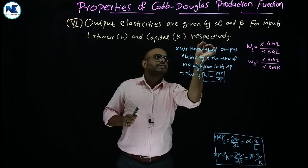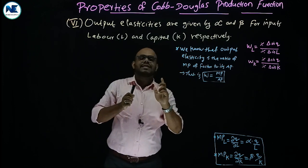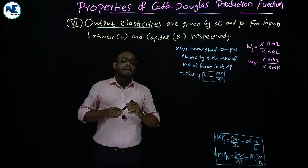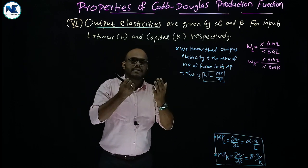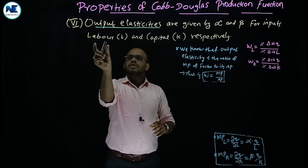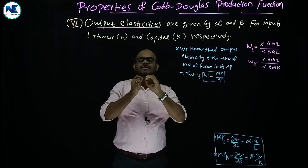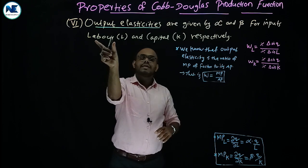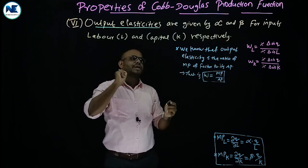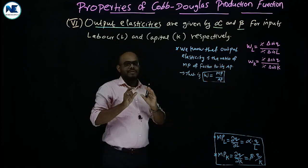Output elasticities are given by alpha and beta for inputs labor and capital respectively. This is a very important property. Output elasticities is a key 5-mark question. The meaning of output elasticity is an important short answer topic. For example, alpha is the labor share and beta is the capital share — the distributive parameters explained in the previous video.